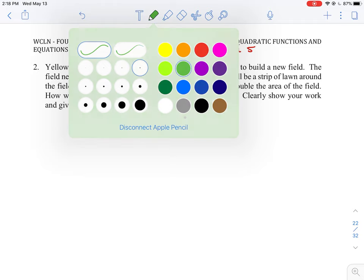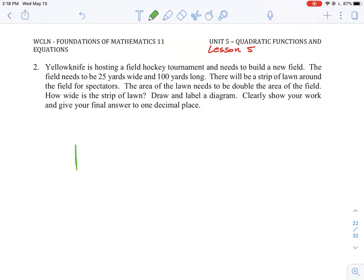So let's just draw in a diagram of what we think this is going to be like. So a field is going to be, in this case is going to be a rectangle. It is going to be 100 by 25.